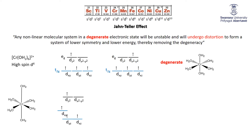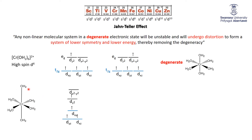Looking at the energy levels: the dyz and dxz go down a little bit, the dz² goes down, and the dx²-y² goes up — because if there's less electron density along z, it becomes more focused in the xy plane. We have moved to a lower symmetry, no longer octahedral, and in doing so we've destroyed the degeneracy and gone to a lower energy. The fourth electron is definitively in the dz², which is lower energy than before.